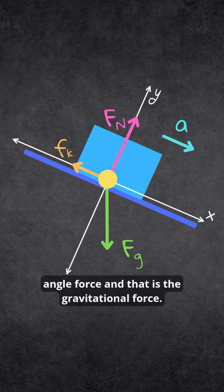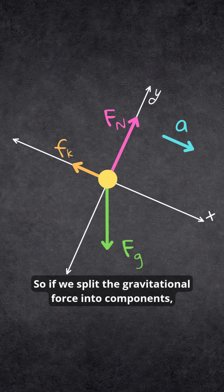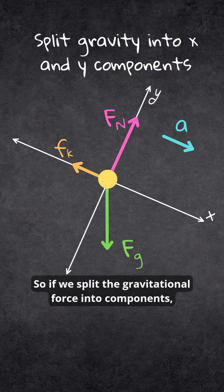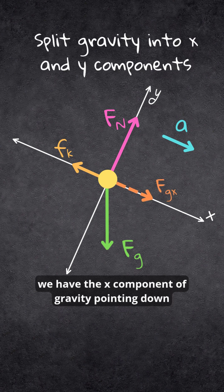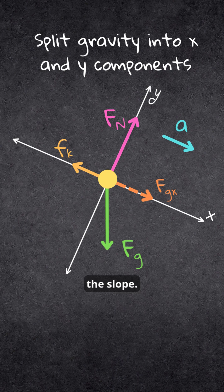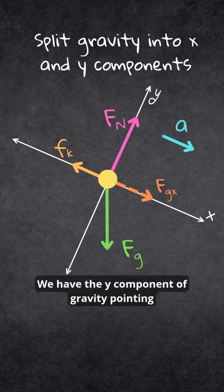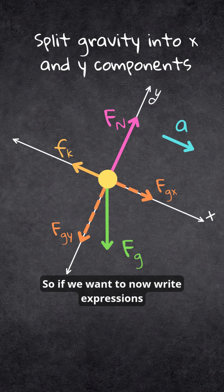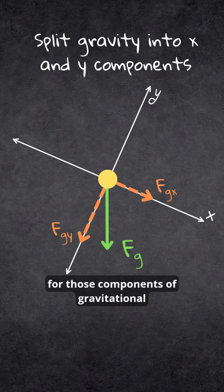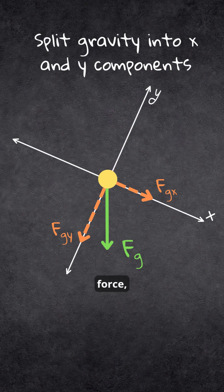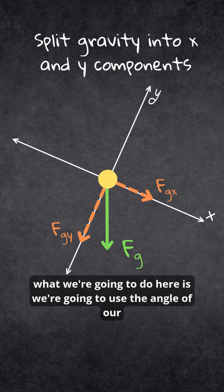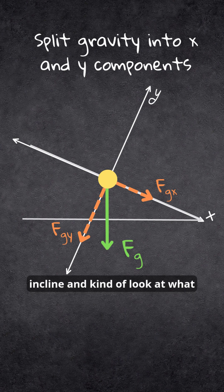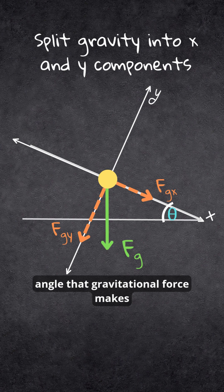Now we only have to deal with one angled force, and that is the gravitational force. If we split the gravitational force into components, we have the x component of gravity pointing down the slope, and the y component of gravity pointing opposite the normal force. To write expressions for those components, we use the angle of our incline and look at what angle the gravitational force makes with respect to the x and y axes.